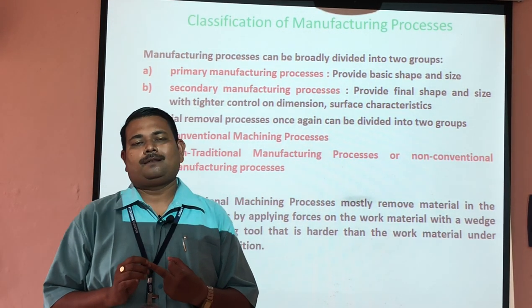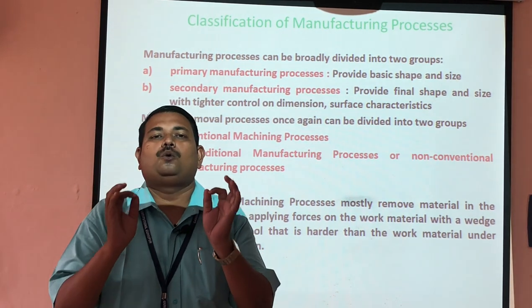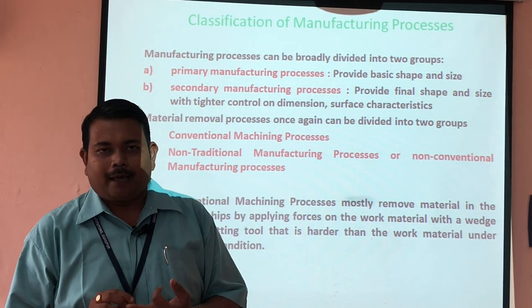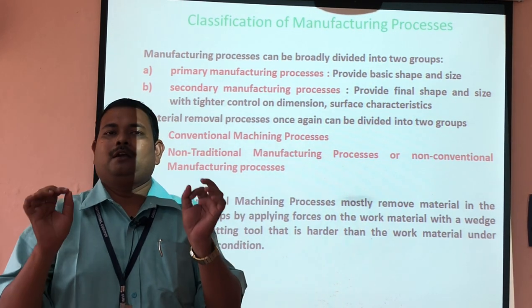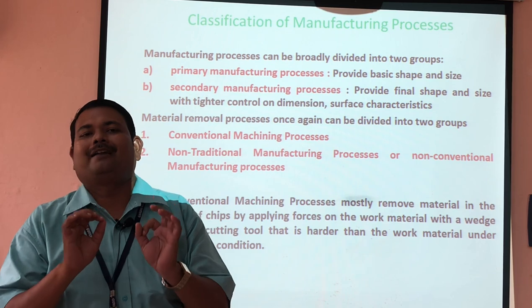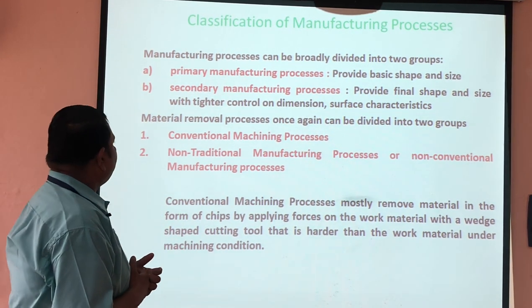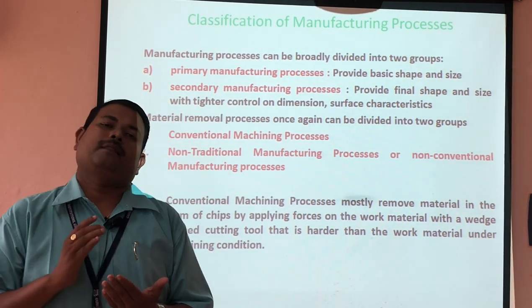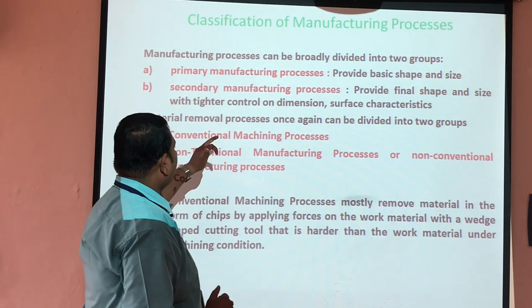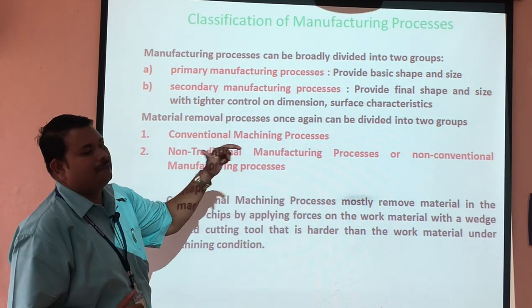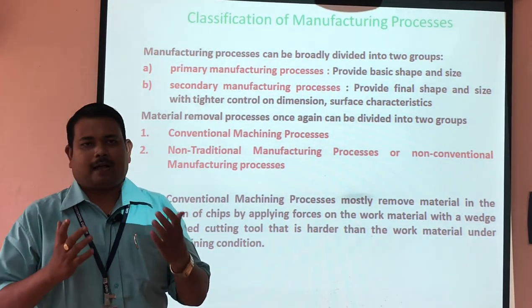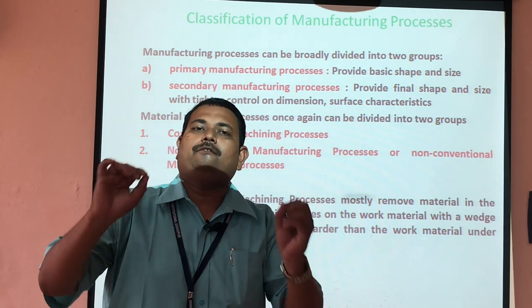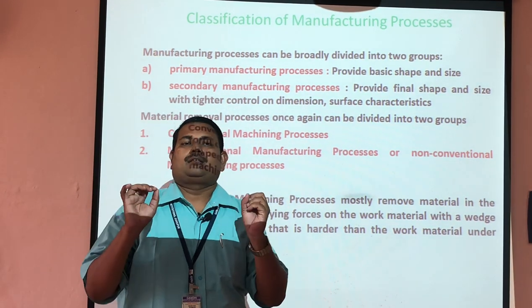In primary manufacturing process, we are only giving a basic shape and size to any component. In secondary manufacturing process, we are giving a desired shape and size to the final product. According to the metal removal process, manufacturing is again of two types: conventional machining process and non-traditional machining process. In conventional machining, it is the conversion of raw material into finished product by using a physical tool, which is known as a cutting tool.